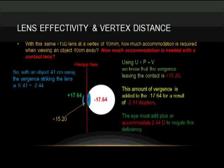Since the object is forty-one centimeters away, the vergence striking the contact lens is one divided by 0.41, or minus 2.44 diopters. That means with U plus P equals V, the vergence leaving the contact lens, which was plus 17.64, is going to be 15.20.